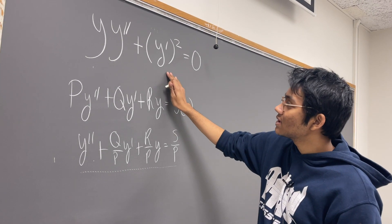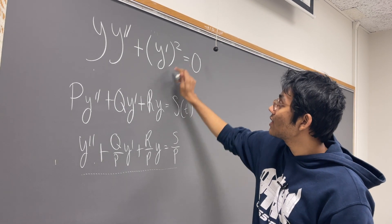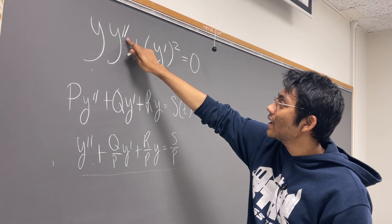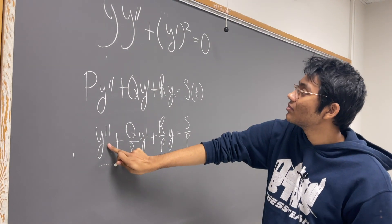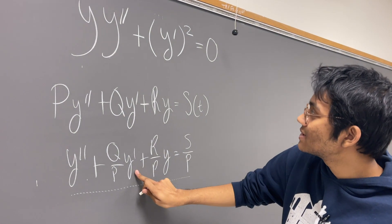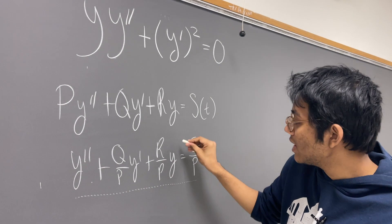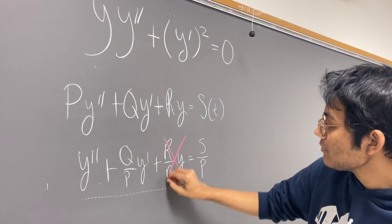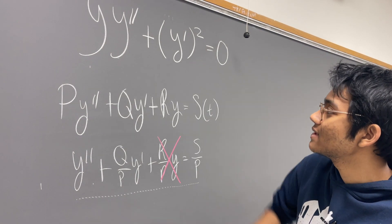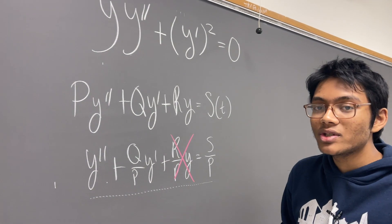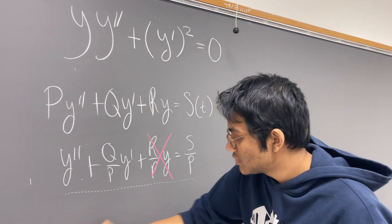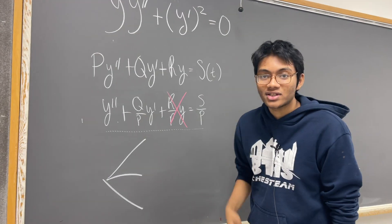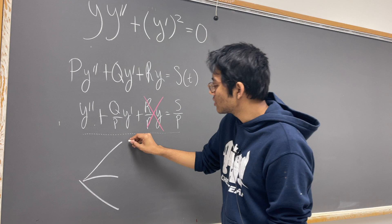And this equation is definitely looking like that — we have a y-double-prime term and y terms here. So we don't have any constant-coefficient terms in this equation. There are three methods available to us to solve second-order differential equations.